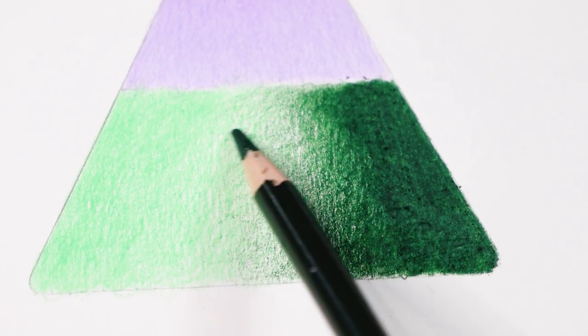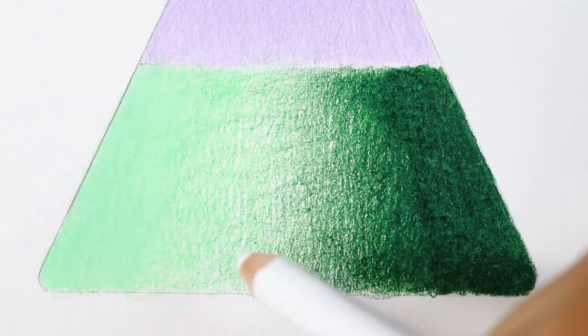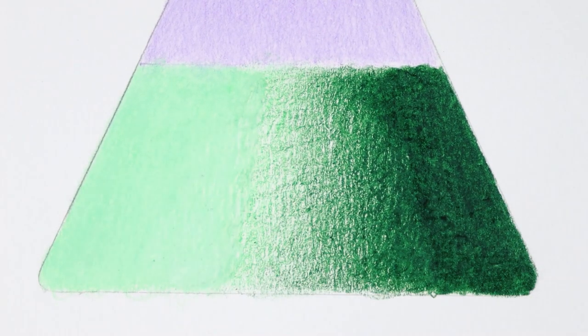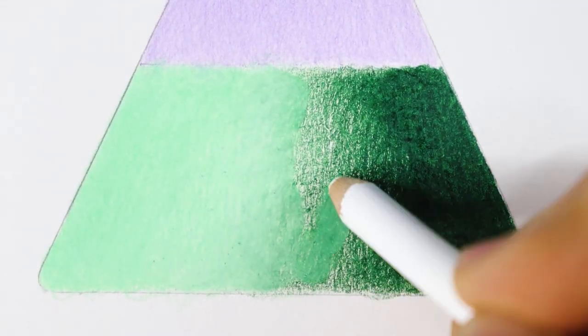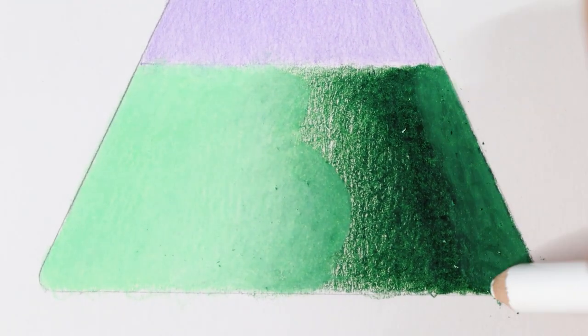You can see how fast the tooth of the paper is filled when you press too hard on the pencil. If you are drawing skin or other smooth subjects try to avoid doing that. Instead start from light to dark and build up the layers. This will give you time to correct the mistakes in time.